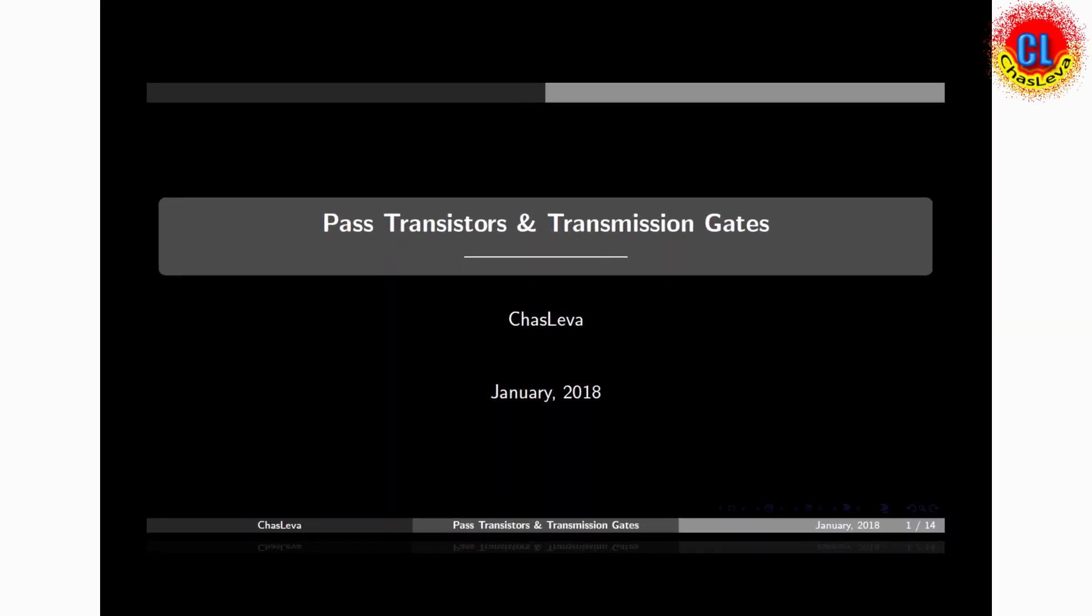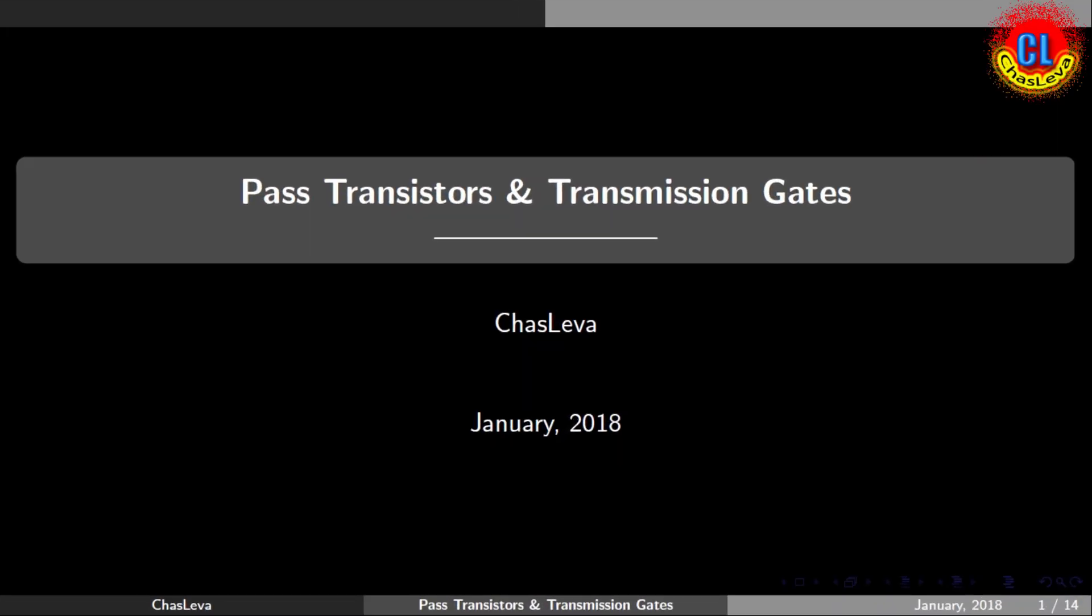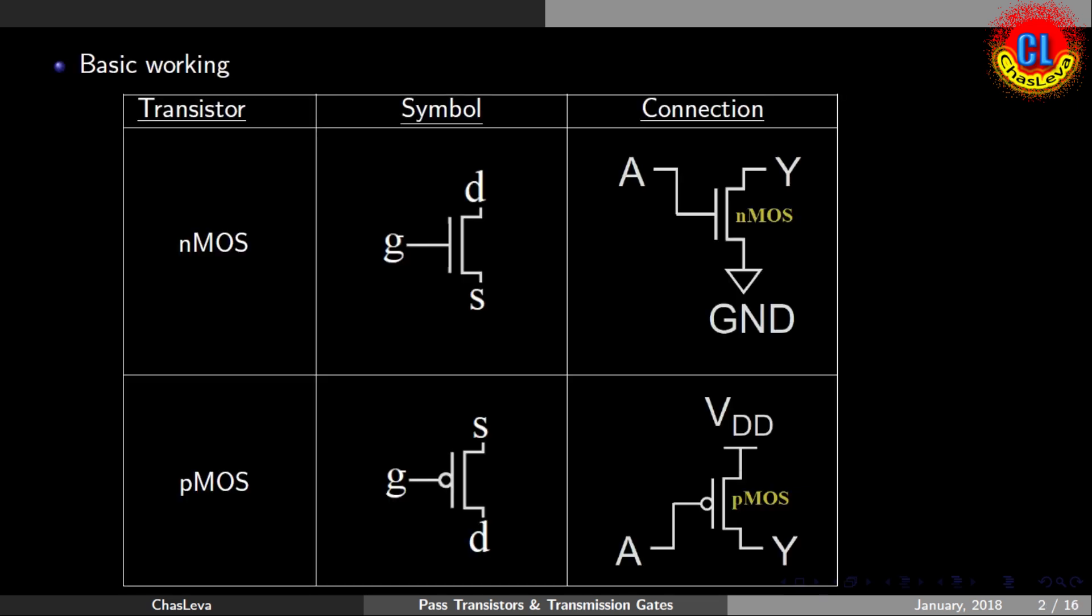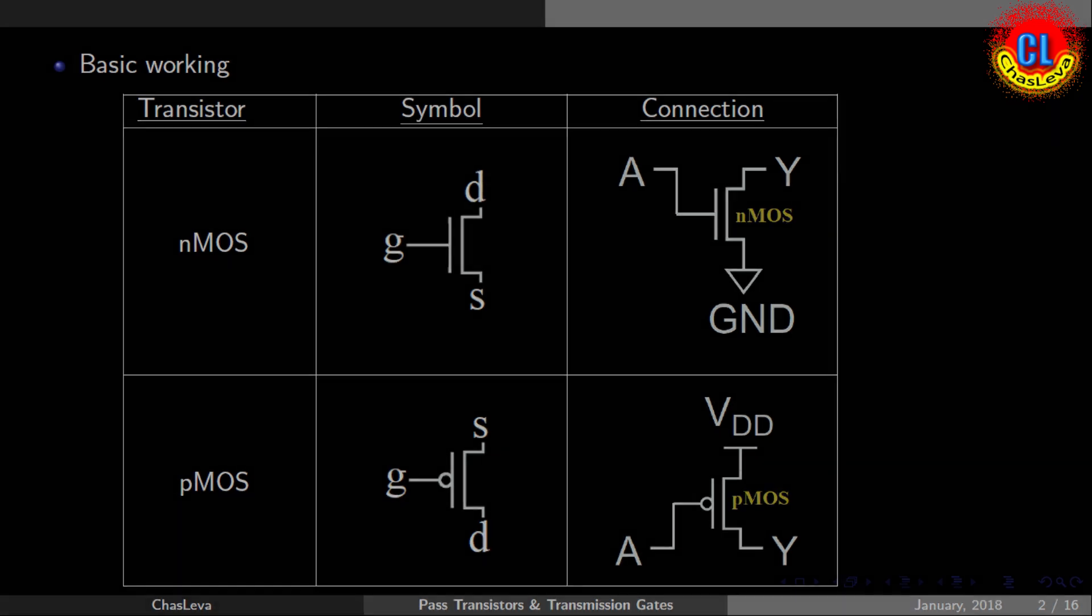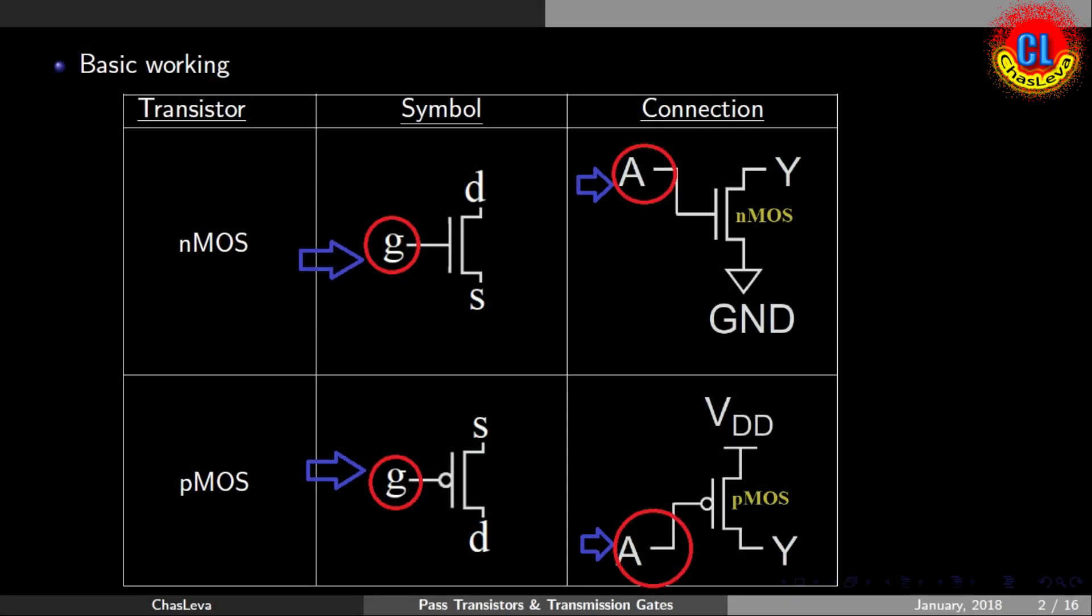Hi friends, have a nice time. Now we are going to discuss pass transistors. Going into pass transistors, we will see the basic working of NMOS and PMOS transistor. In general, the gate of the transistor connects to an input signal and drain to output signal, while source will connect either to VDD or VSS.